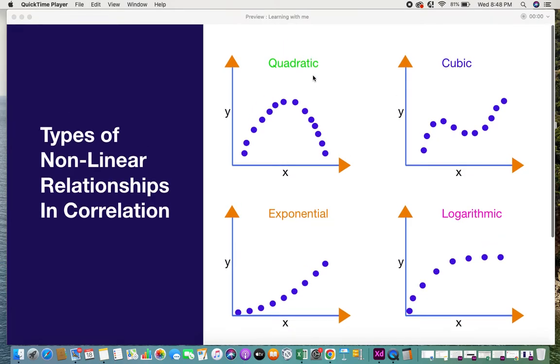The first one is quadratic relationship. This is a form of an inverted U shape. If you plot x and y variables for a particular scenario, you would find that it forms an inverted U pattern which is a quadratic nonlinear relationship.